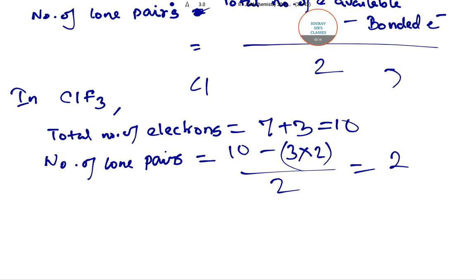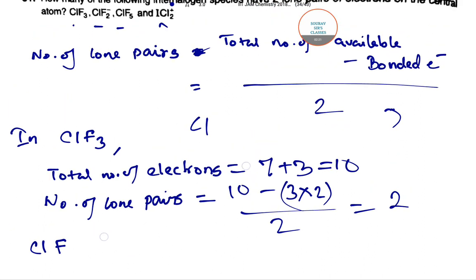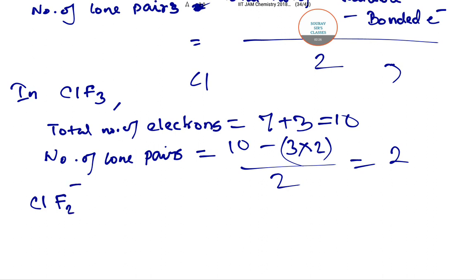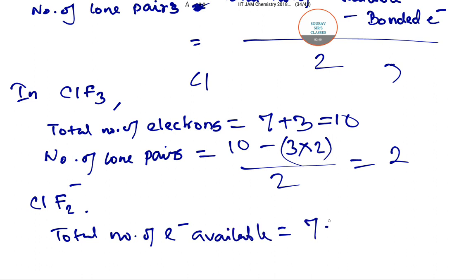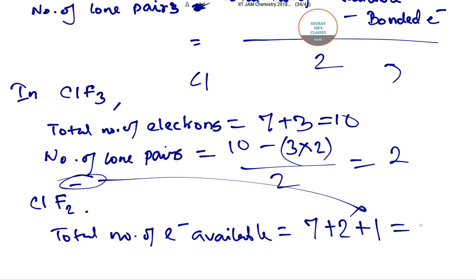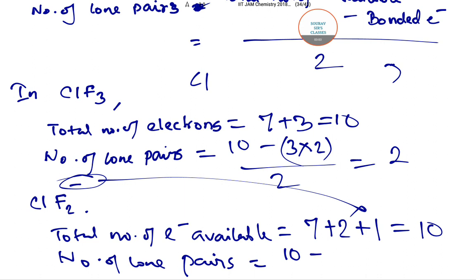Moving on to CLF2⁻: the total number of electrons available equals 7 plus 2 plus 1, because of the negative charge, which again equals 10. The number of lone pairs equals 10 minus the bonded electrons: there are 2 fluorine atoms so 2 bonds, and 2 into 2 equals 4 bonded electrons. Dividing: 10 minus 4 divided by 2 equals 3 lone pairs.